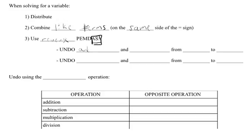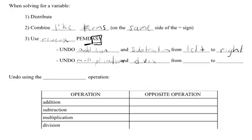So we're going to undo addition and subtraction first, from left to right, just like we did with PEMDAS. Then we're going to undo multiplication and division, from left to right, just like with PEMDAS.